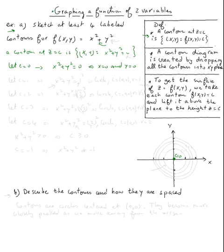Now let c = 1. The level curve at c = 1 is x² + y² = 1. One is the same as 1², so this is a circle with center (0, 0) and radius 1.